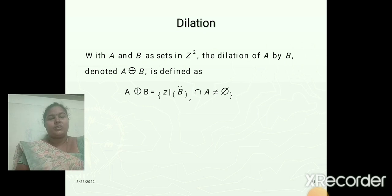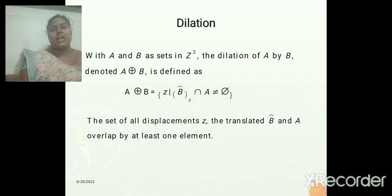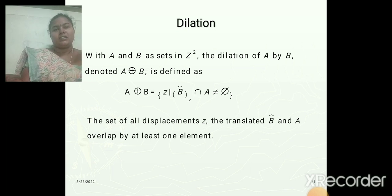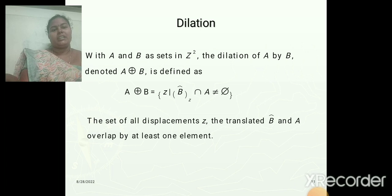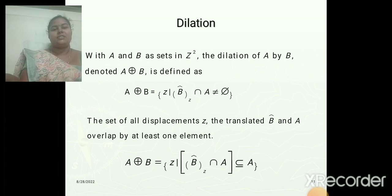Next is the dilation operation. With A and B as sets in Z-square, the dilation of A by B is denoted by a plus symbol inside a circle. A dilation B is defined as — in other words, this equation is based on reflecting B about its origin and shifting the reflection by Z value. The dilation of A and B is the set of all displacements Z such that B-cap and A overlap by at least one element. Based on this, we can write: A dilation B equals, using the intersection function, B-cap of Z intersected with A, unioned with A.